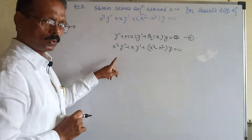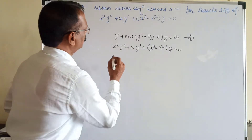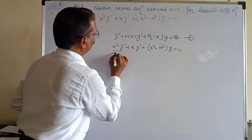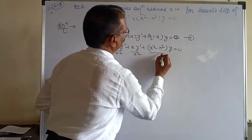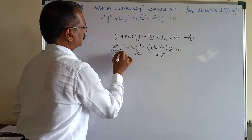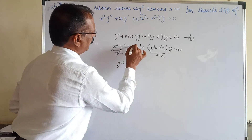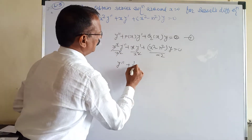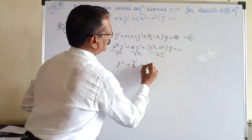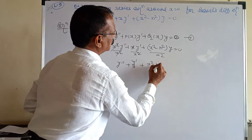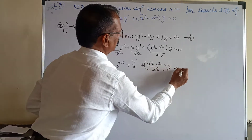We have to divide throughout by x². So x² cancels and we get y'' + (1/x) y' + ((x² − n²)/x²) y = 0. Comparing with the standard form, P(x) = 1/x and Q(x) = (x² − n²)/x².